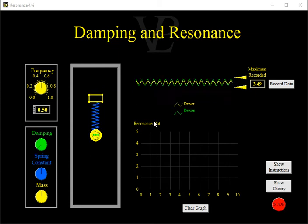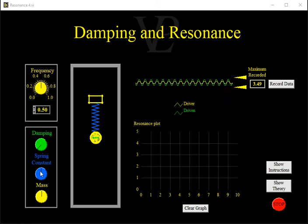So let me just give you a quick introduction to what the simulation looks like. Over here we've got three controls, one that will allow you to change the mass, another one that will allow you to change the spring constant. I don't expect you to change those, you can do if you want to but you don't need to.